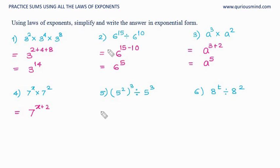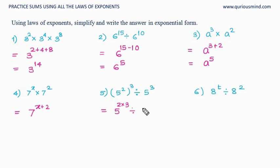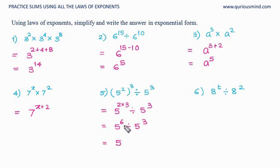In this one, 5 raised to 2 whole raised to 3: the base remains 5 and the powers get multiplied — 2 into 3 — giving 5 raised to 6, divided by 5 raised to 3. Now the bases are same, so the base remains same in the answer; it is division so powers get subtracted: 6 minus 3, and the answer is 5 raised to 3.